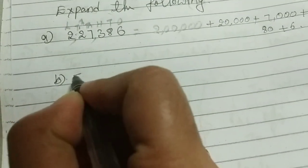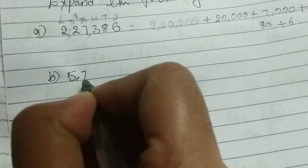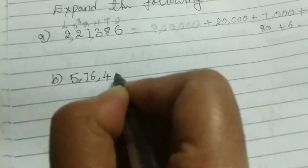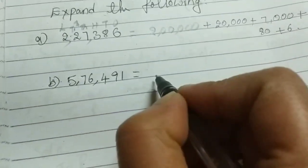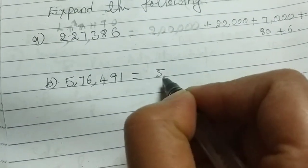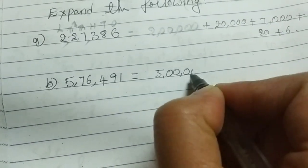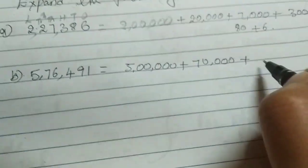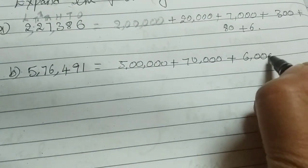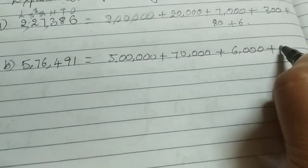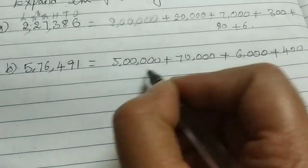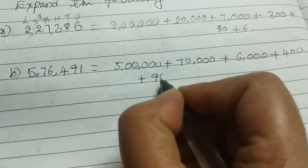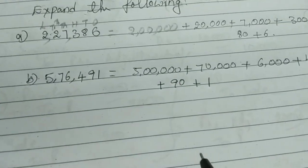How can we expand this number? 5 lakhs 76,491. So, 5 lakhs plus 70,000 plus 6,000 plus 400 plus 90 plus 1. Okay.